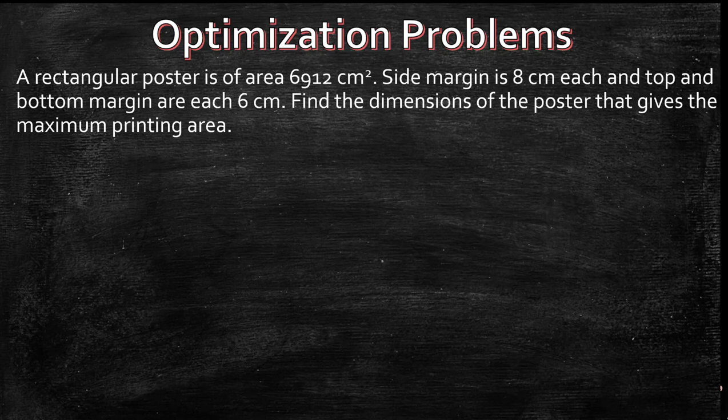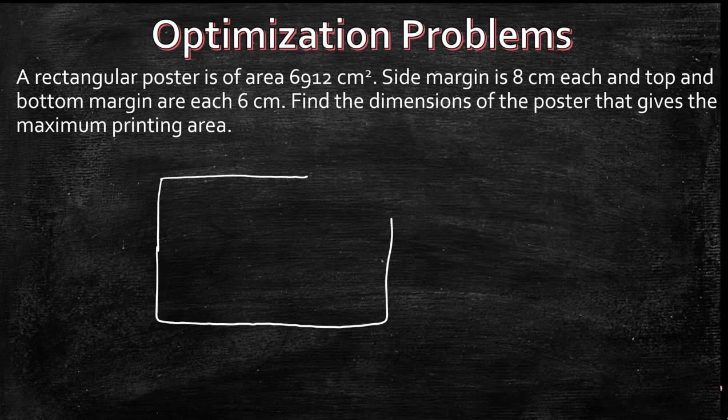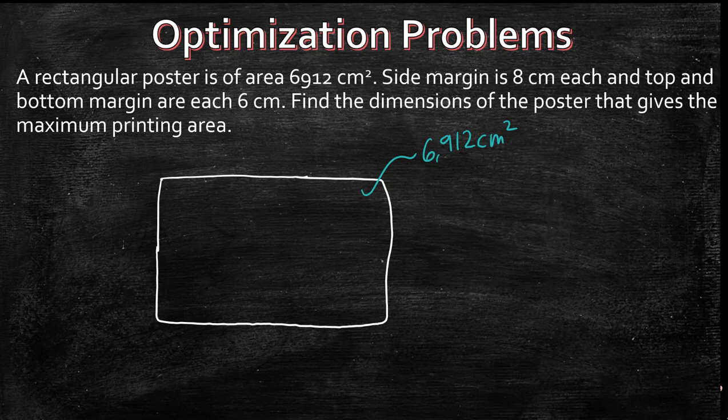A rectangular poster is of area 6912 centimeters squared. So let's draw this out. We know that this in here is 6912 centimeters squared.